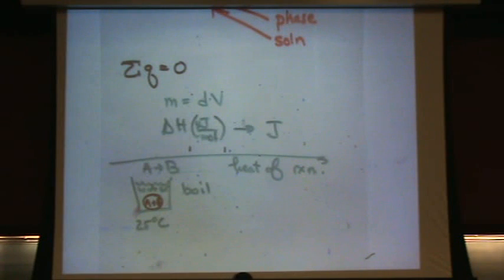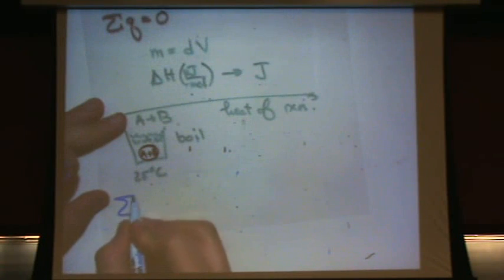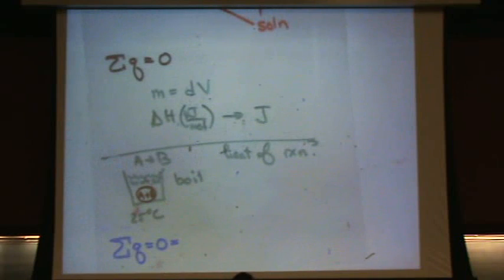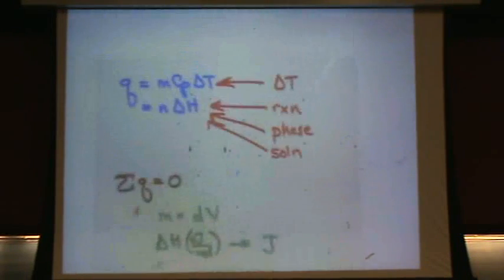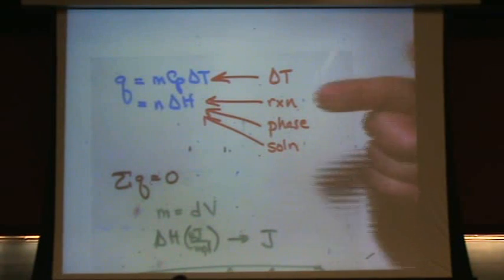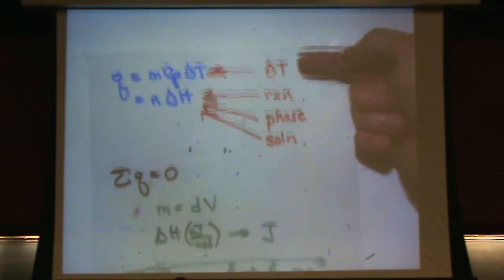Here's how you set this up. Since I made it up, there'll be no specific numbers because there's no specific reaction, but we can just set this up. Here's how I always do this: sum of the Q's equals zero. Now we've got to figure out all the Q's.